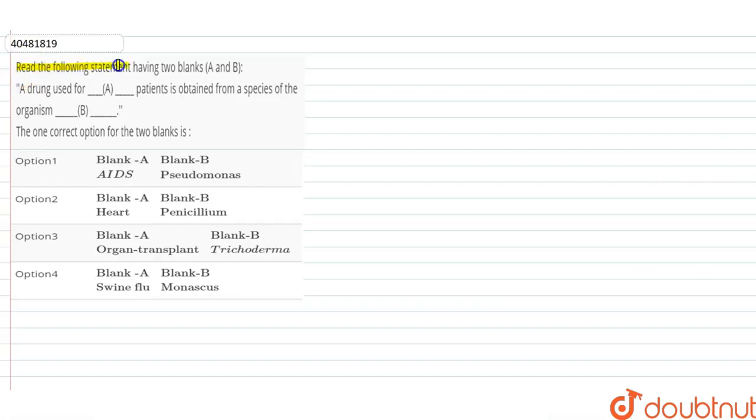The question is, read the following statement having two blanks A and B. Here we have to fill up the statement. A drug used for blank A patient is obtained from a species of organism blank B. Here we have to see the one correct option for the two blanks. Now, if we discuss the options, then we can clarify it.